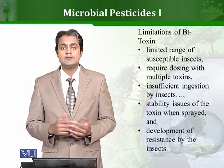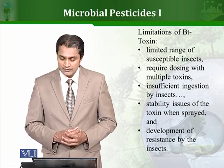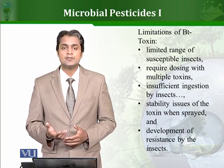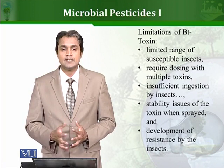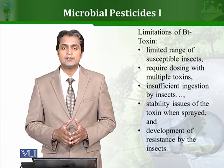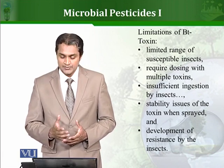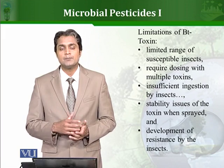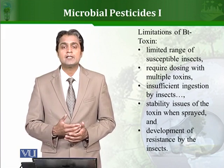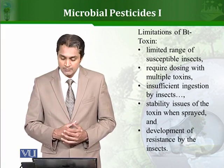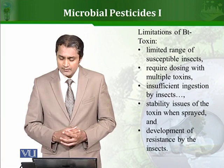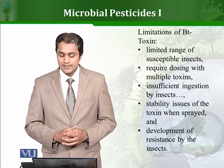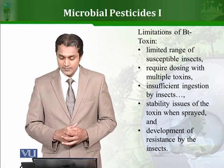As with any other product, there are certain limitations to Bt toxin as well. For example, there is a limited range of susceptible insects. Being target-specific is an advantage — Bt toxin or any other microbial pesticide is almost always target-specific — but it is also a disadvantage, because it will only kill a certain type of pest and will have no effect on others. In order to kill a wide range of pests, other chemical compounds are also needed. Because it is target-specific, it requires dosing with multiple toxins, so it is often mixed with other compounds.